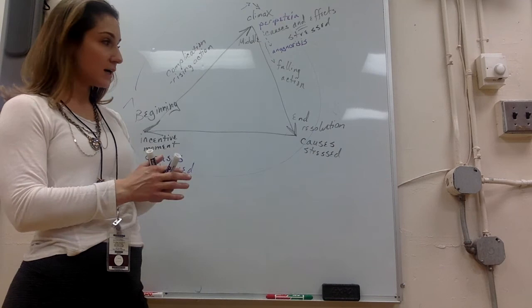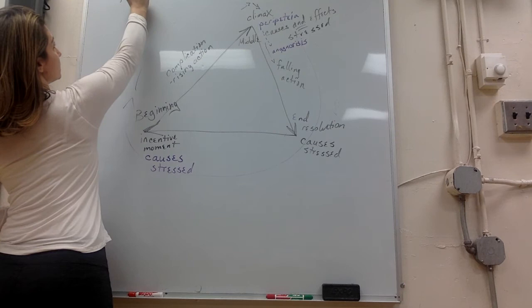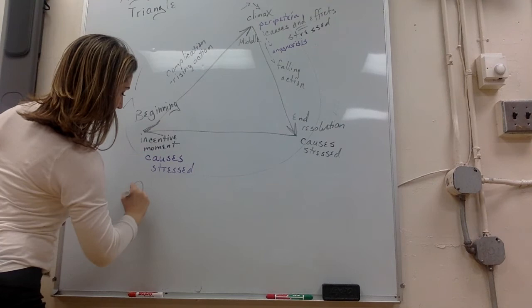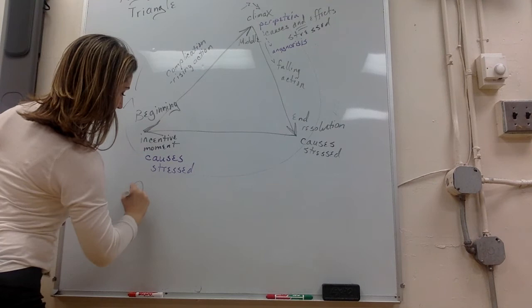So this is Freytag's triangle. And this is an example of our plot with unity of action.